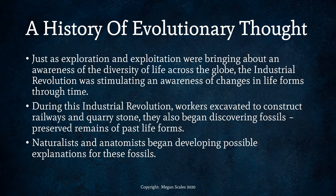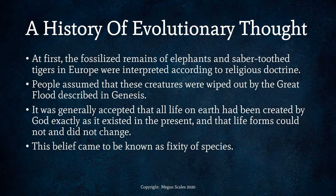Naturalists and anatomists began developing possible explanations for these fossils. At first, the fossilized remains of elephants and saber-toothed tigers in Europe were interpreted according to religious doctrine. People assumed these creatures were wiped out by the great flood described in the book of Genesis in the Bible. It was generally accepted that all life on Earth had been created by God exactly as it existed in the present, and that life forms could not and did not change — a belief that became known as the fixity of species.